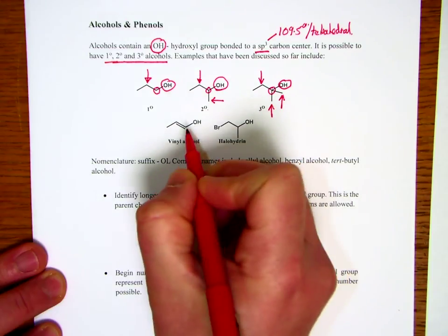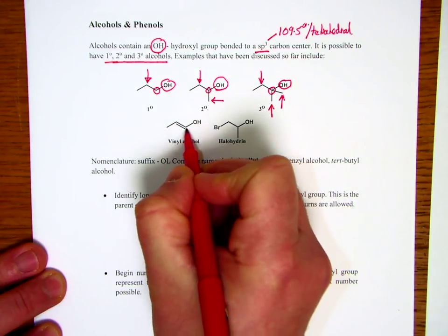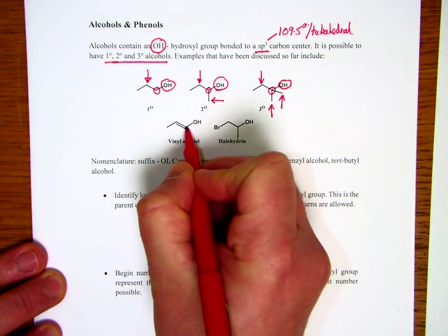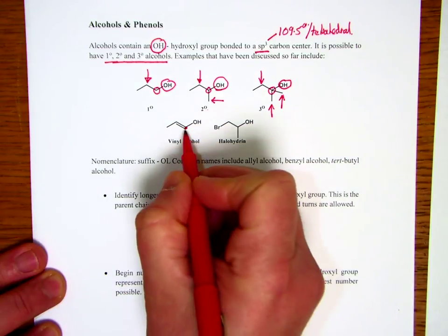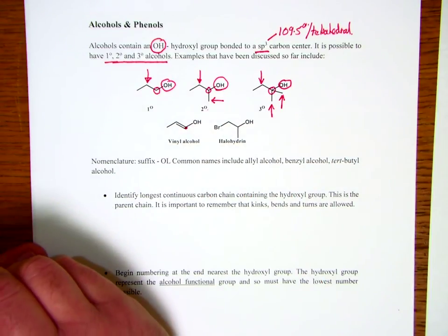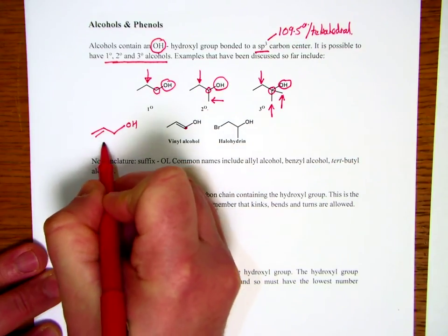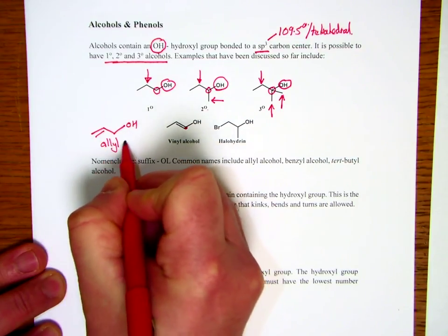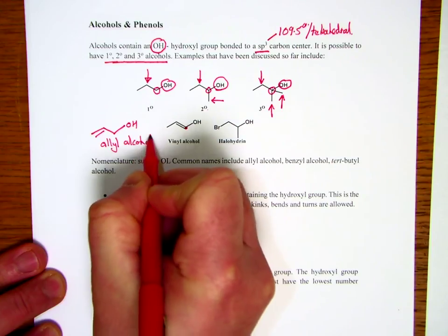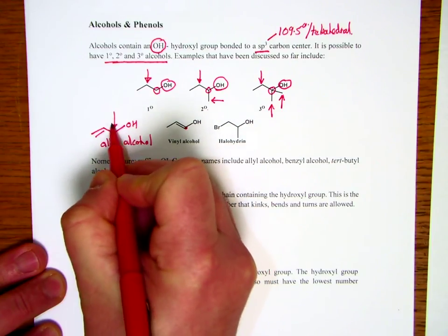In addition to that, we have vinyl alcohols. Remember the hydroxyl group attached directly to the carbon of the double bond. This is our vinyl position, so that's a vinyl alcohol. Not to be confused with our allyl alcohol, in which the hydroxyl group is attached to the allylic position.